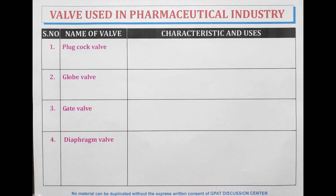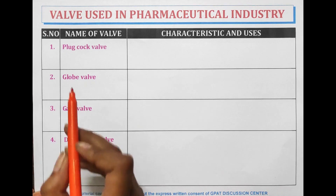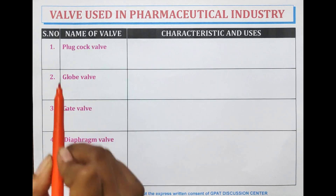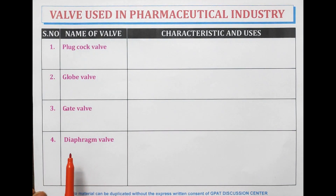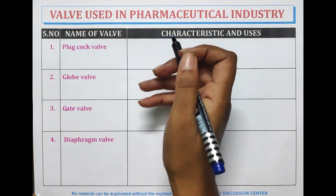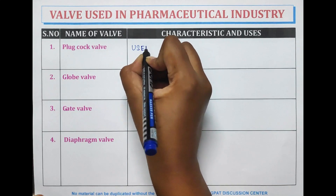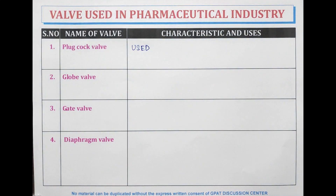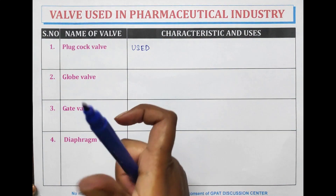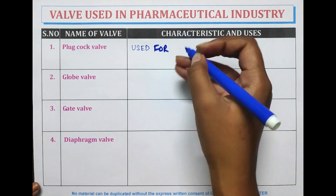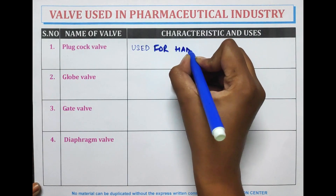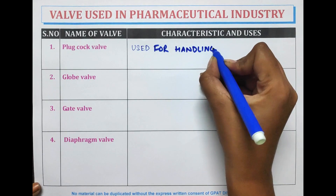Now we are going to discuss the valves used in pharmaceutical industries: plug cock valve, globe valve, gate valve, and diaphragm valve. The plug cock valve is used for handling compressed air.